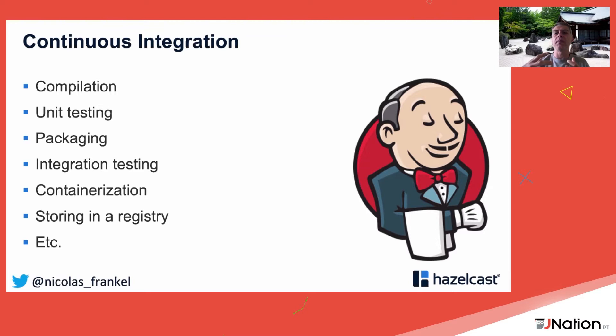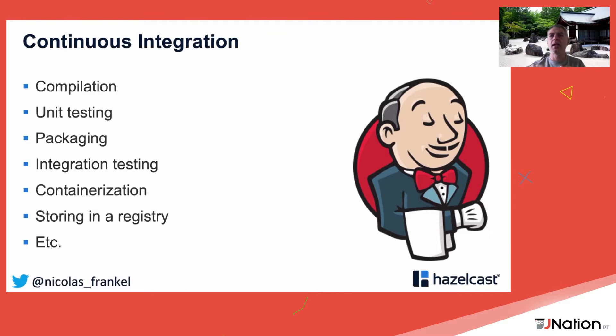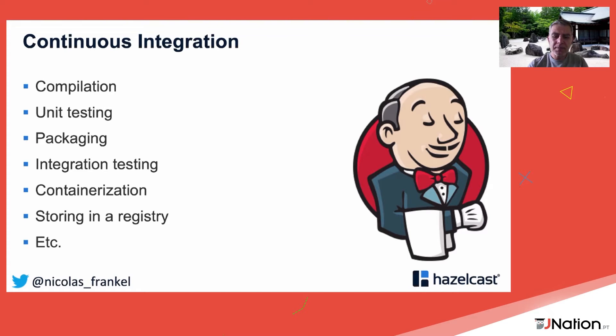You are probably already familiar with continuous integration — every time a developer pushes, the CI server or GitHub Actions performs specific tasks such as compilation, unit testing, and packaging. If you want to go further, you can do integration testing, containerization, and store the container or package in a registry.